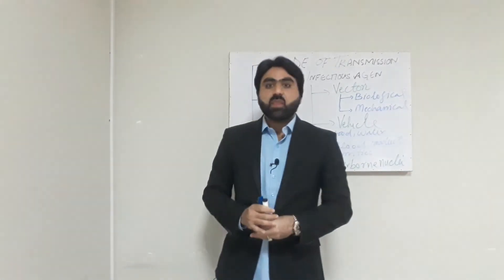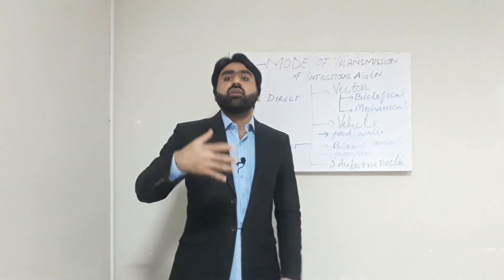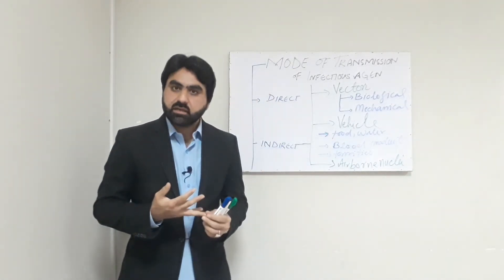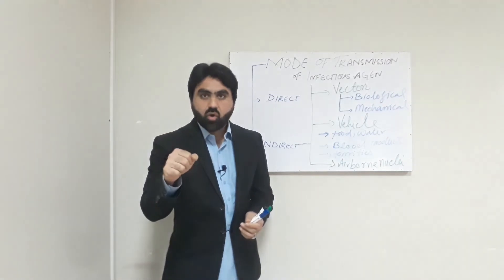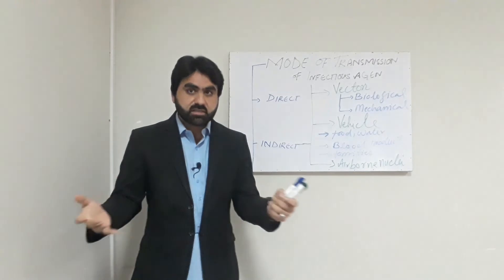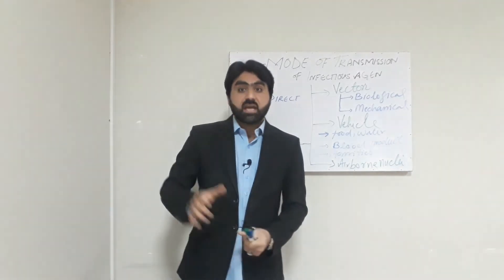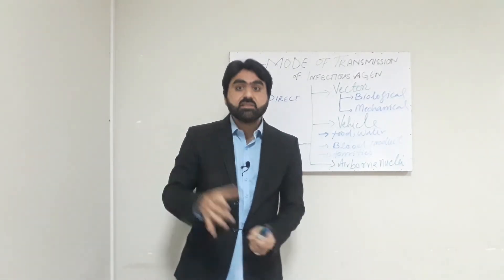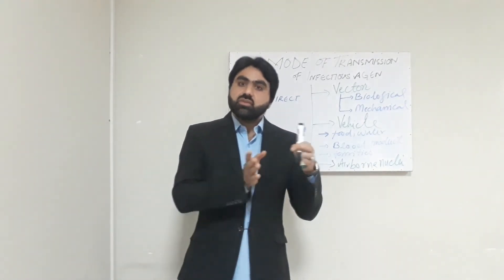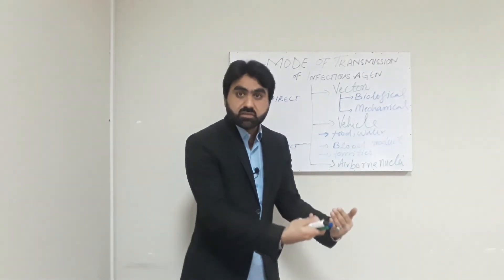Fomites are non-living objects that can carry infectious agents from reservoir to the susceptible host — such as toys, handkerchiefs, door knobs, mobile phones, and surgical instruments used in dental, general, or orthopedic surgeries. All of these come under the heading of fomites, and this type of transmission falls under the indirect mode of transmission.